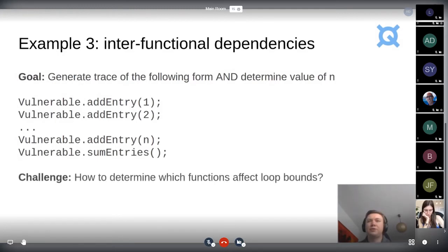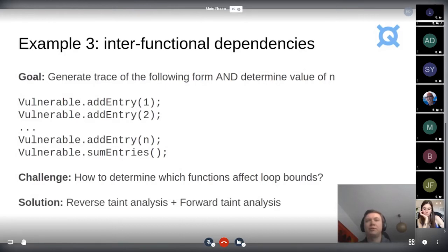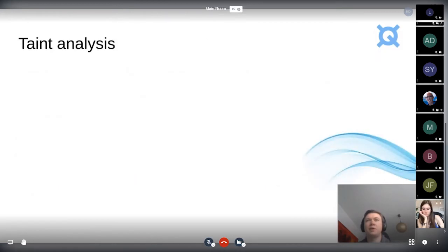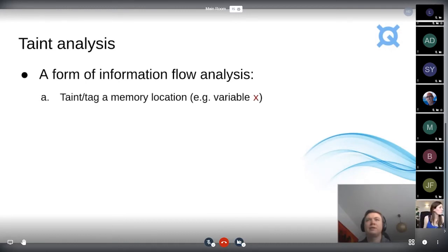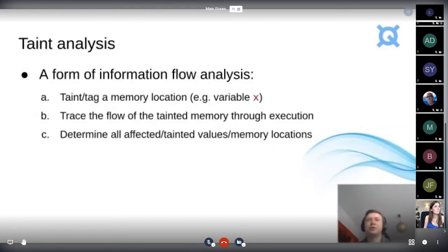So the challenge is how to determine, first you need to determine which functions affect basically the loop bounds. Because as we saw before, there was also a function called get entry, and the reinforcement agent should not be calling that. It would be just wasting time calling that one because it's not going to affect the loop bounds inside of sum entries. And the solution to detect which functions affect the loop bounds that we are taking is to do reverse taint analysis and then forward taint analysis. For those of you who are not familiar, taint analysis is a form of information flow analysis where you first taint or tag a memory location, for example, a variable X. Then you trace the flow of that tainted value through the execution of your smart contract functions, and you determine which instructions or which other memory values are affected by that tainted part.